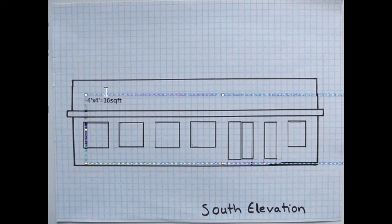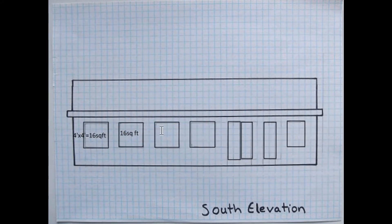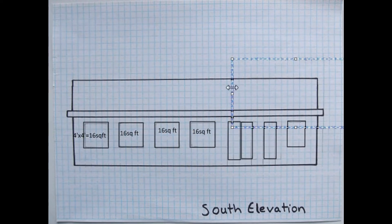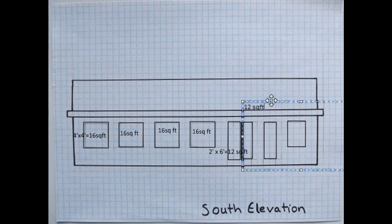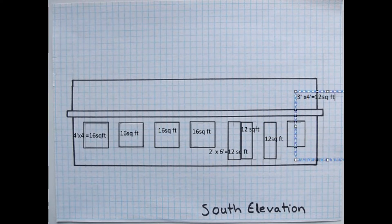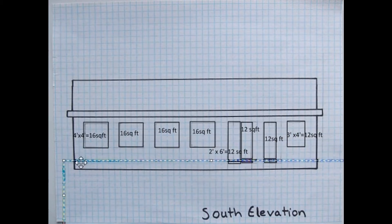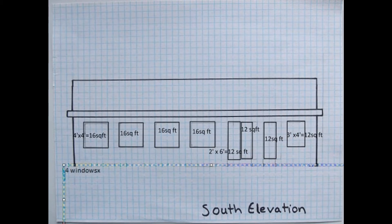We have decided to draw in four windows that are each 16 square feet, three glass doors that are each 12 square feet, and one smaller window that is also 12 square feet. When we add up the area of each window and glass door, we get 112 square feet. Yay! This is very close to our goal of 115 square feet.